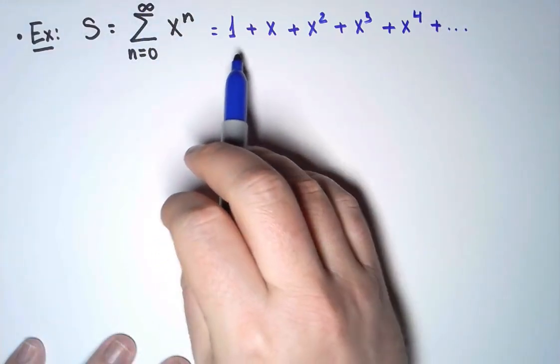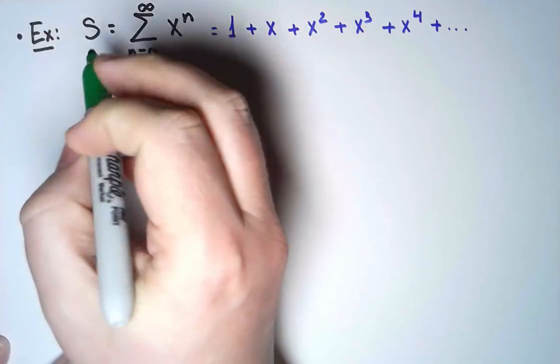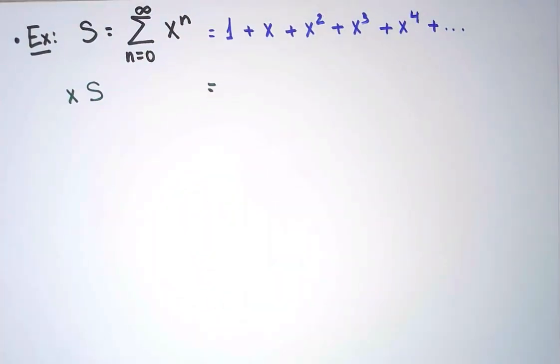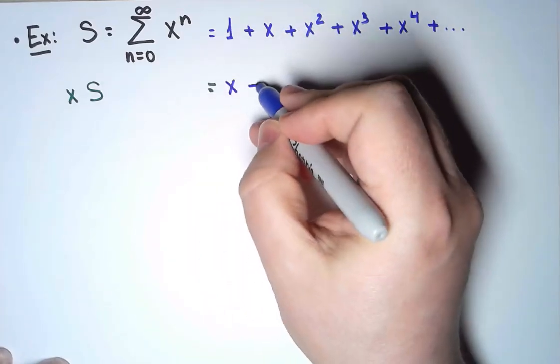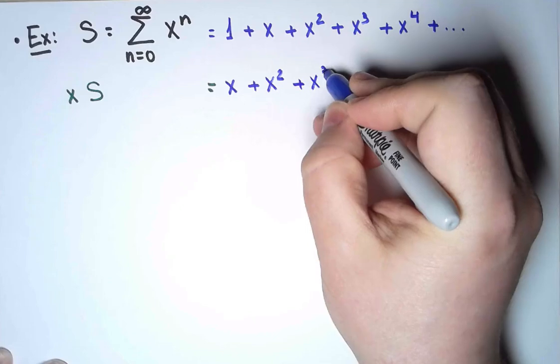When I write going to infinity, it means I'm adding infinitely many times. The sum keeps on going forever. The trick I'm going to use to compute this sum is to take the whole expression, and I'm going to multiply it times x. And here's what happens when I do that. 1 times x is x. x times x is x squared. x squared times x is x cubed, and so on.